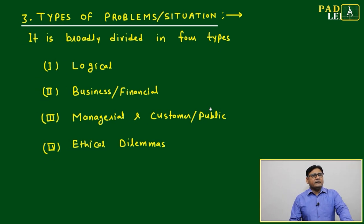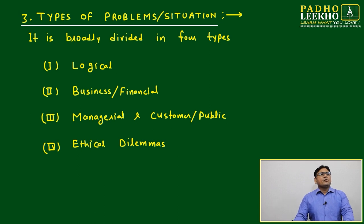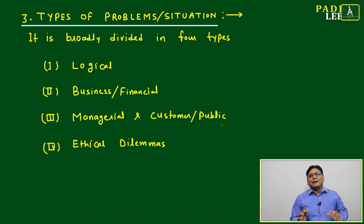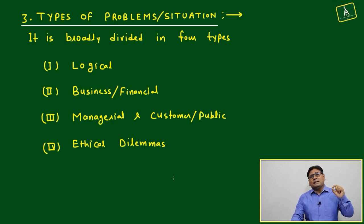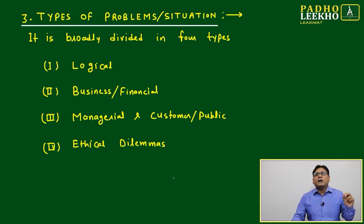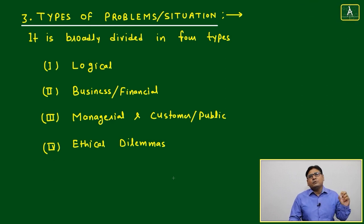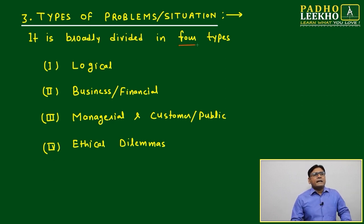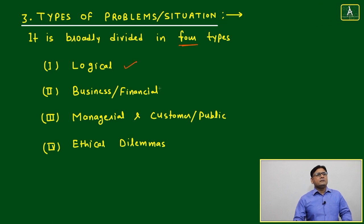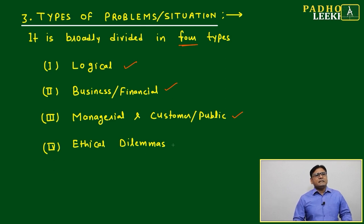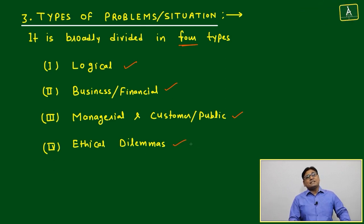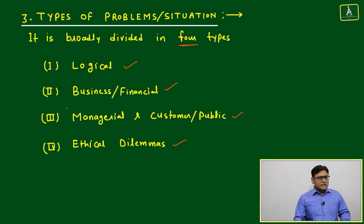Our first understanding of decision making — our first step — is how to categorize the problems or situations. This is our most fundamental thing. If we have done this part properly, the next part will be easy. It is broadly divided into four types: logical, business and financial, managerial, and customer-related or public-related ethical dilemmas. These are the four major categories; subcategories can be multiple.